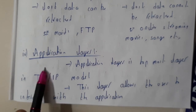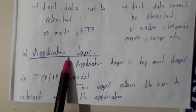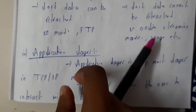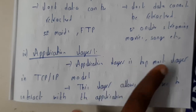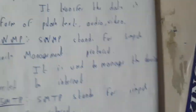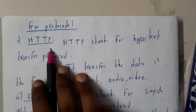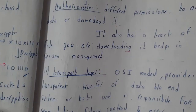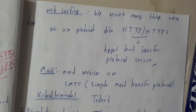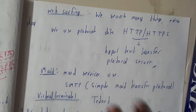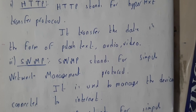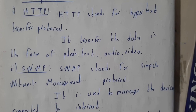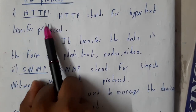The application layer is the topmost layer of the TCP/IP model and is one of the most important layers, as all protocols are available here. It allows the user to interact with applications. HTTP (Hypertext Transfer Protocol) and HTTPS (HTTP Secure) are popular protocols here, commonly seen when surfing the web — secure sites use HTTPS.